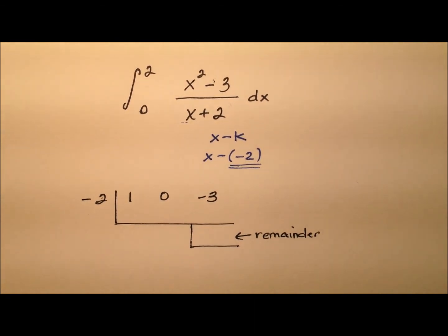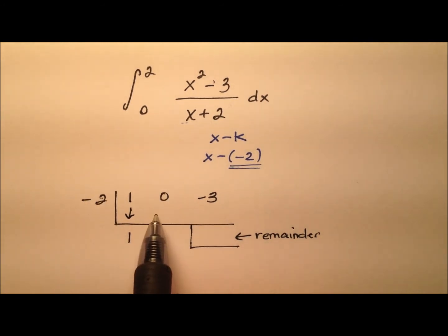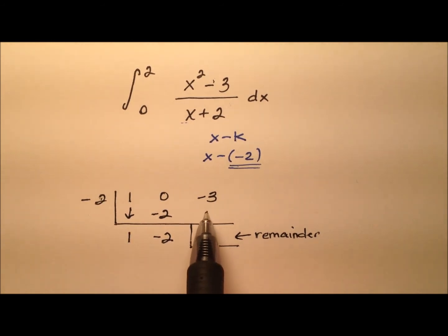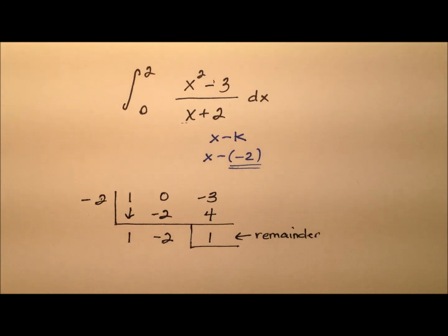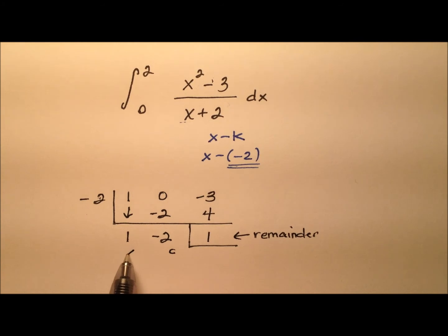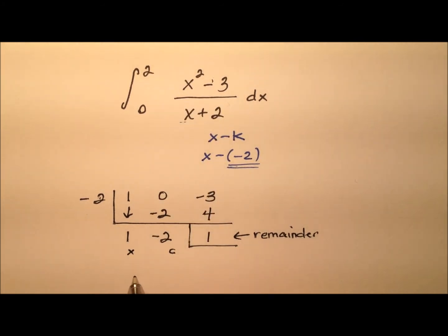Let's work through the synthetic division. We bring down the leading coefficient of 1, then do a series of multiplication with addition. Negative 2 times 1 is negative 2; we add to get negative 2. Then negative 2 times negative 2 is 4; we add to get a remainder of 1. Putting this all together, we have a constant and a linear term, so the quotient becomes x minus 2 with remainder 1.